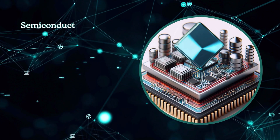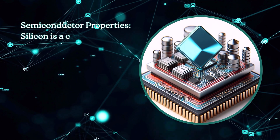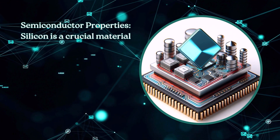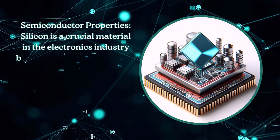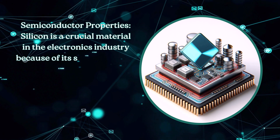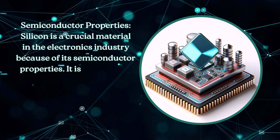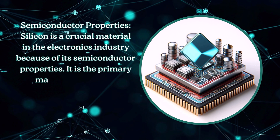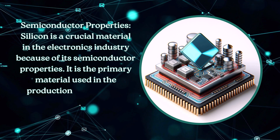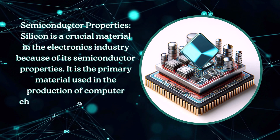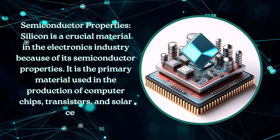Silicon is a crucial material in the electronics industry because of its semiconductor properties. It is the primary material used in the production of computer chips, transistors, and solar cells.